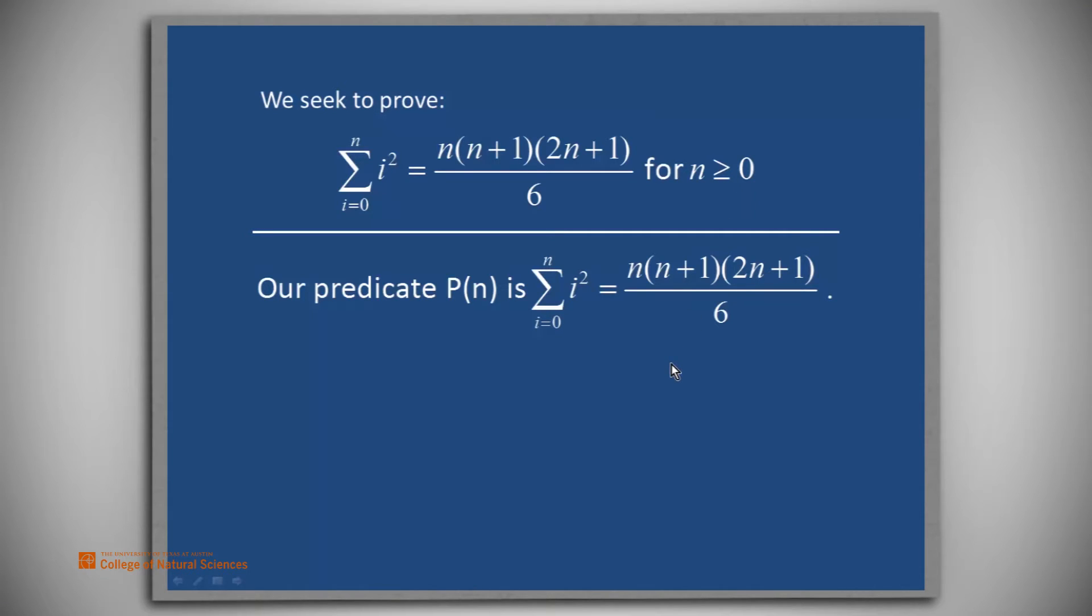To prove P(0), we look at the left-hand side. We see it's the sum from i equals 0 to 0 of i squared, which is just 0 squared, which is 0.